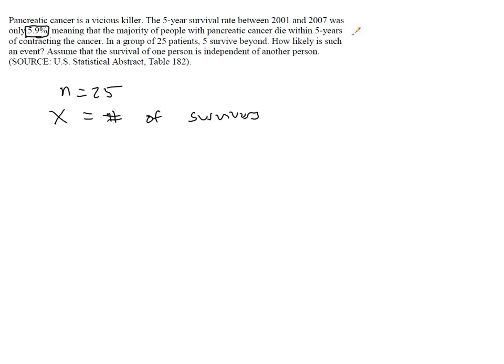We have a group of 25 patients and 5 of them survived. We're guessing that's pretty unlikely since the survival rate is so low. Let's figure out what the probability is that we get exactly 5 survivors in this group.